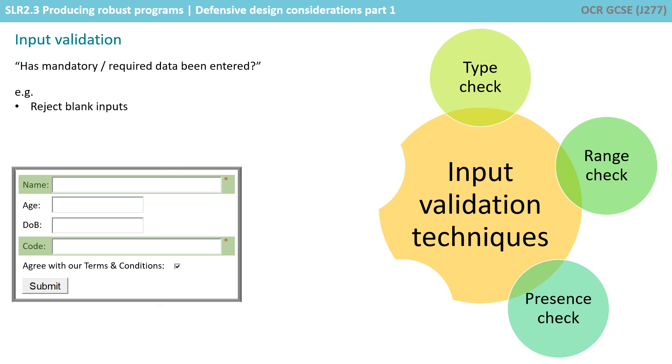Presence check. The user might not enter any data at all. There may be certain required fields, for example, entering your email address when using online forms before continuing. How will your program cope with no data being entered? Will the input be treated as a null or empty string or as a zero?